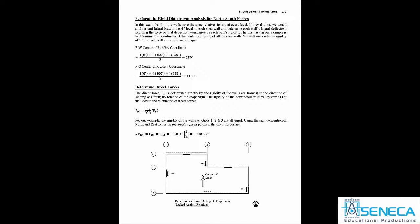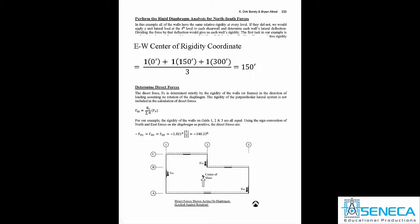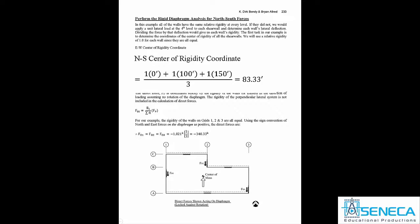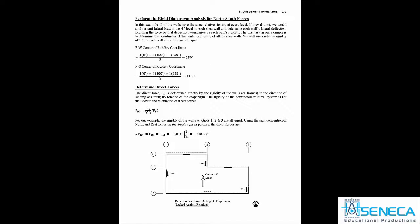Let's start moving this along. The first thing to do is calculate the center of rigidity of the diaphragm — we've already calculated the center of mass. The east-west center of rigidity, measured from the intersection of A1, is 150 feet. The north-south center of rigidity coordinate, measured from the same point, is 83.33 feet.